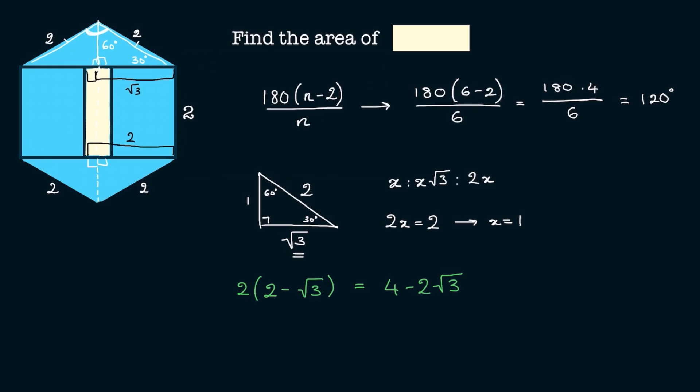Now we need to find the area of this rectangle. We already have the shorter side, and to find the area we need to multiply the shorter side by the longer side. Well, what's the longer side? It's just 2. So to find the area, all we need to do is multiply 2 times (4 minus 2 radical 3), and the area of the rectangle will be 8 minus 4 radical 3.